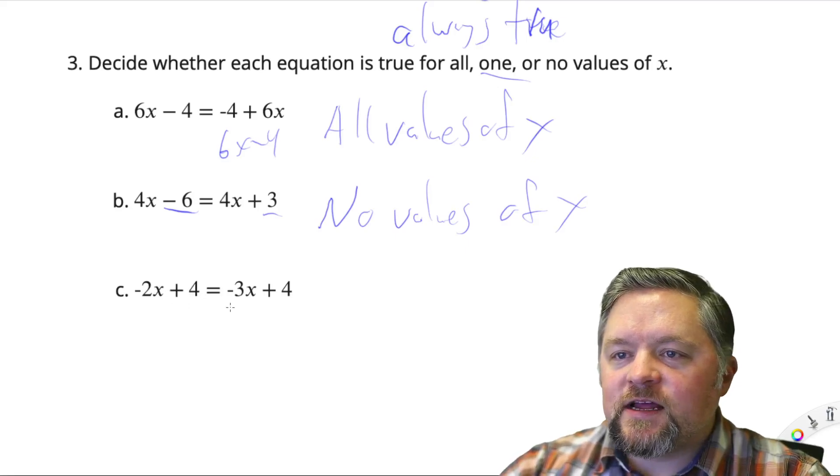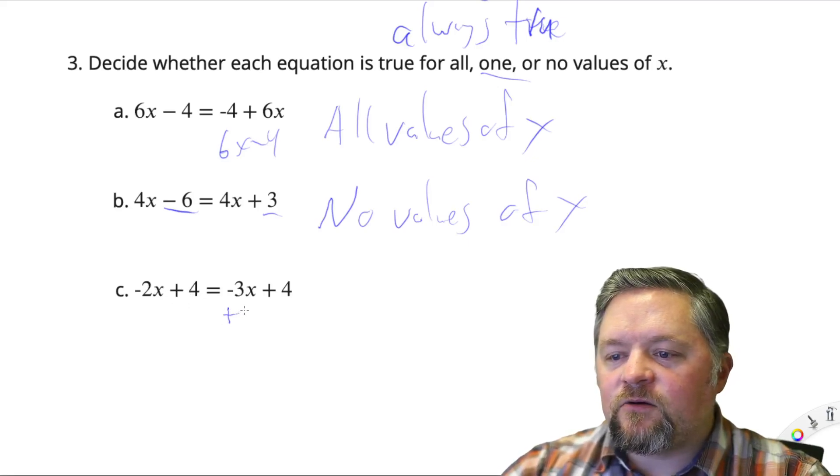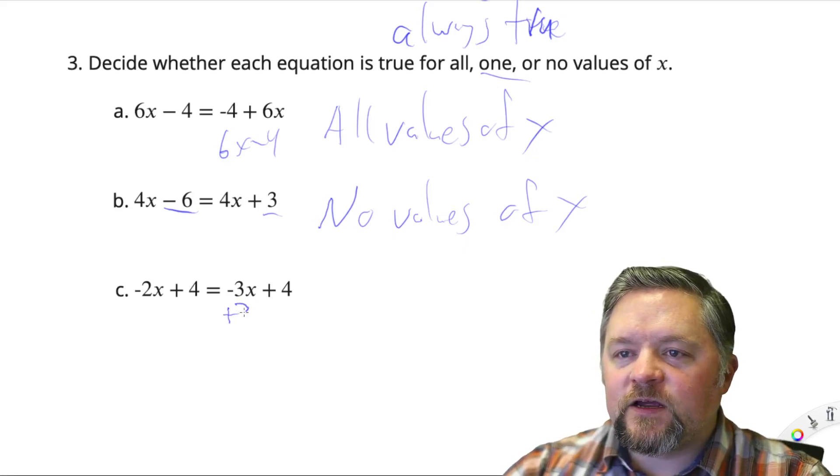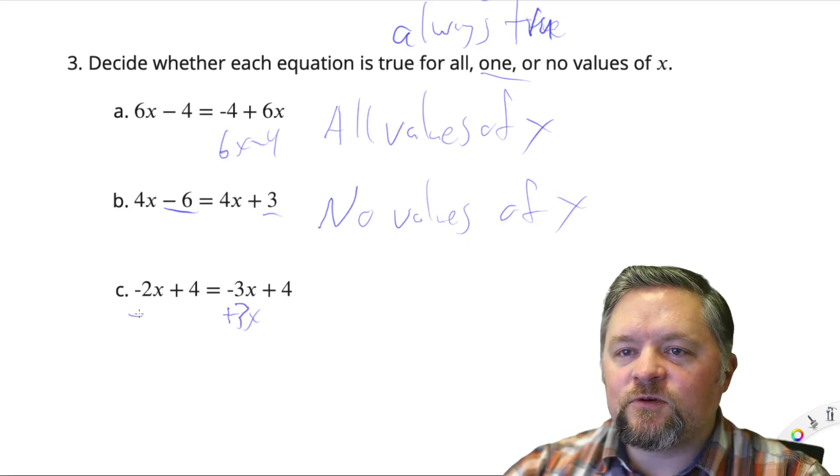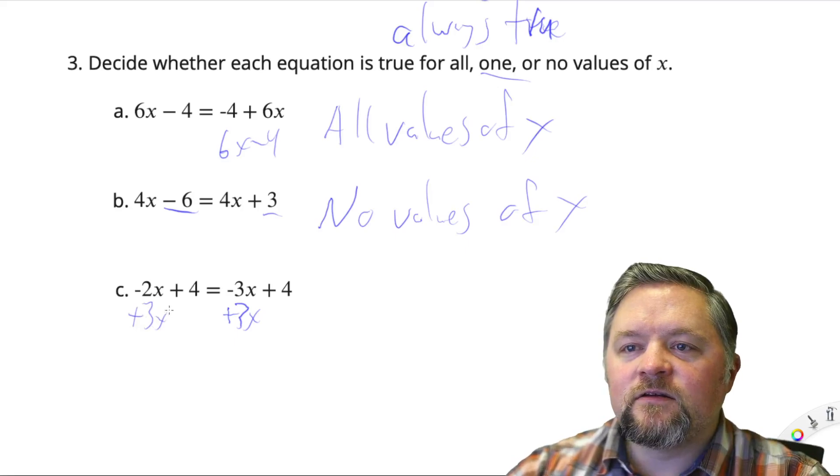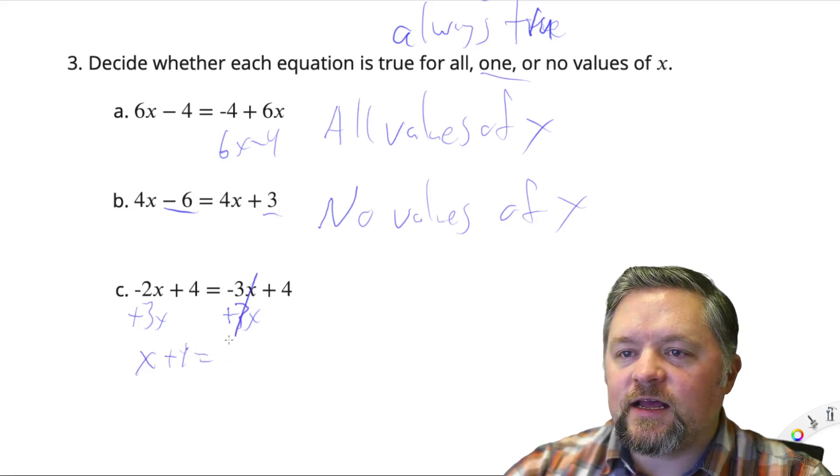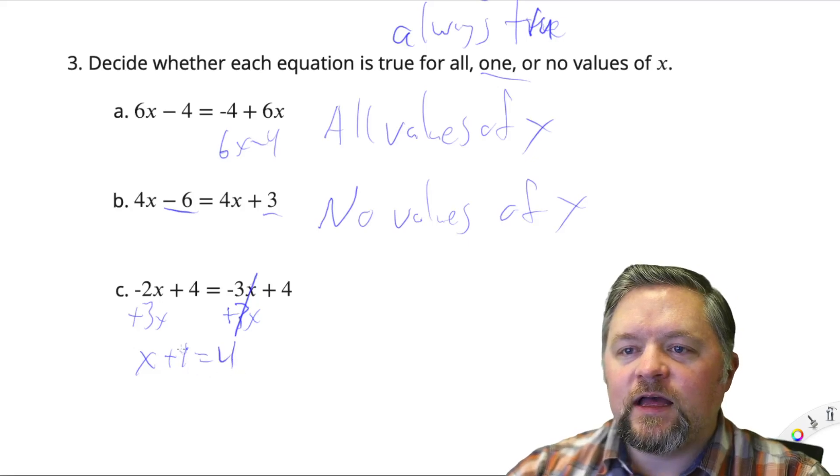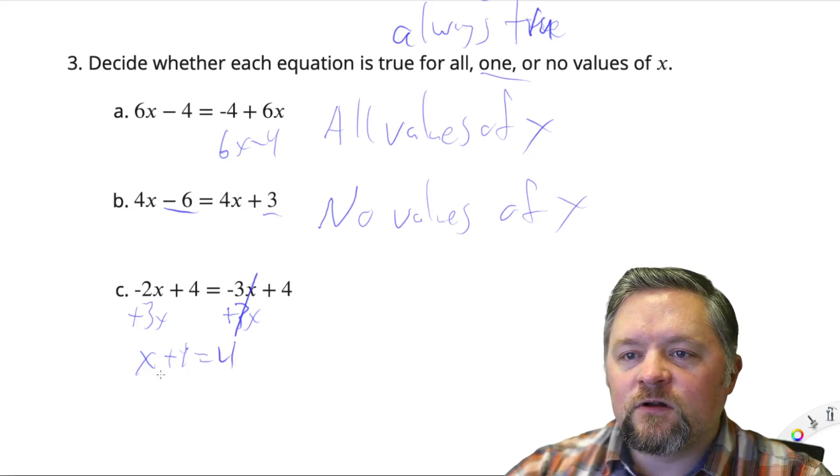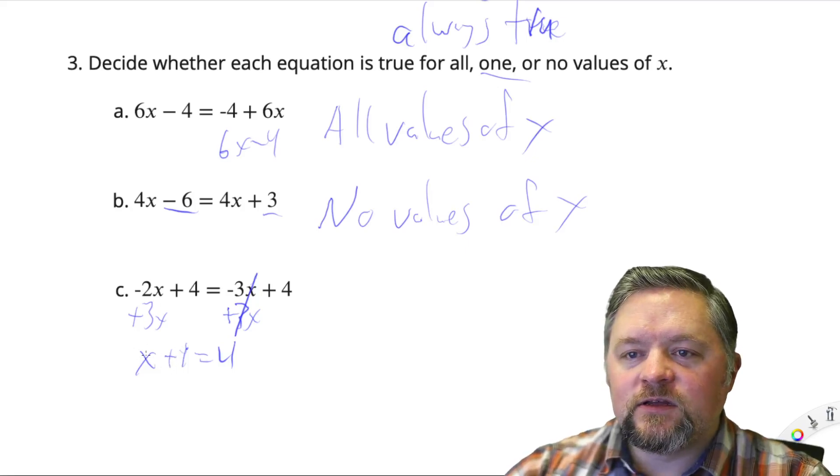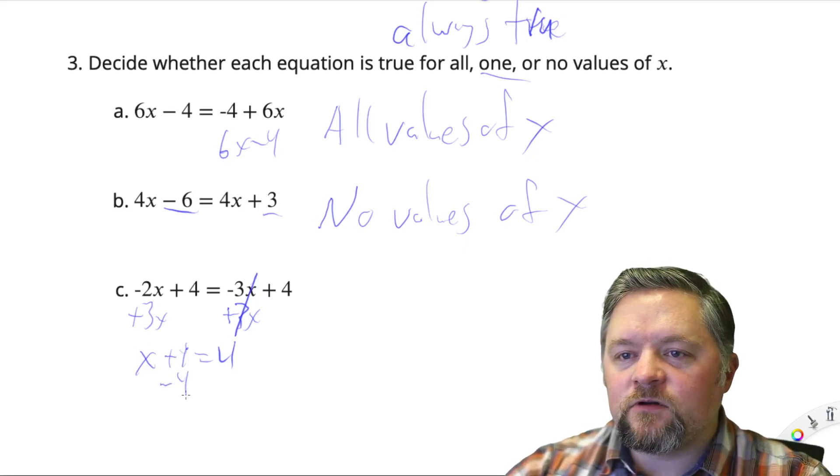I don't like this negative 3x. I'm going to make it go away. How do we get rid of negative 3x? We add 3x. Do it to one side, do it to the other. Negative 2x plus 3x is x plus 4 equals, those canceled, we're left with 4. x plus 4 equals 4. What do I do now? I'd have to get rid of this 4 stopping the x from being alone. Do it to one side, you do it to the other.